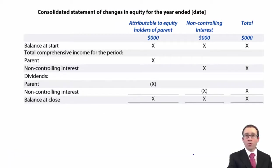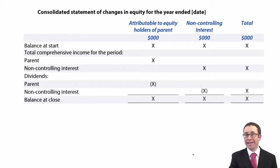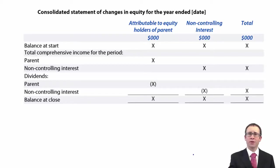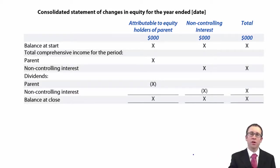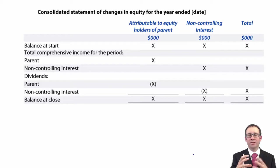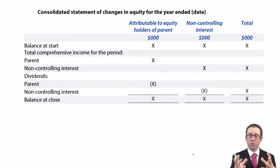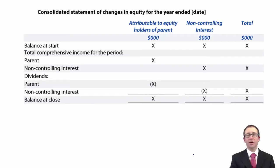We're going to introduce the group statement of changes in equity and then work through an example. It's a tricky little topic, but it's important you understand it now because when we look at changes in ownership — the chapter entitled Changes in Group Structure, which comes a little later in the course — those two topics tend to get tested together. So we'll talk more about changes in group structure later. For now, we're just going to focus on the group statement of change in equity.